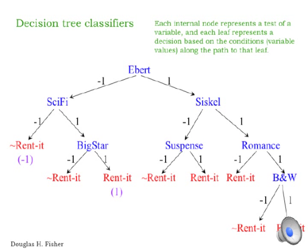In this example, all the internal nodes of the decision tree are binary valued with two children. But that's not a necessary restriction on decision trees. There can be decision trees with internal nodes that have more than two children.